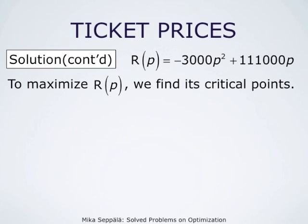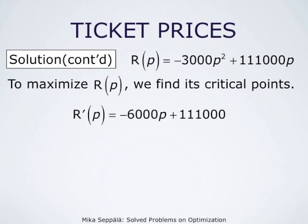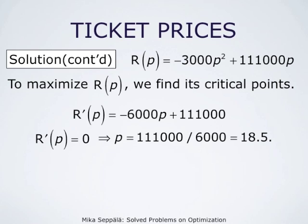To maximize the revenue function R(P) = −3,000P² + 111,000P, we find the critical points of this function. We differentiate the revenue function with respect to its variable, the price P. The derivative is R'(P) = −6,000P + 111,000. The critical point is obtained by solving R'(P) = 0, that is −6,000P + 111,000 = 0, which yields P = 111,000/6,000 = $18.50.